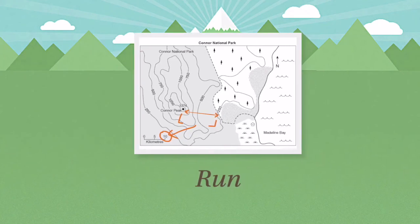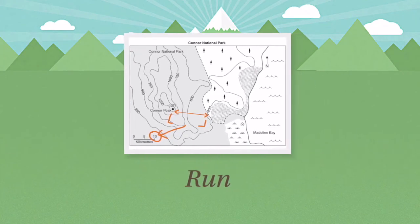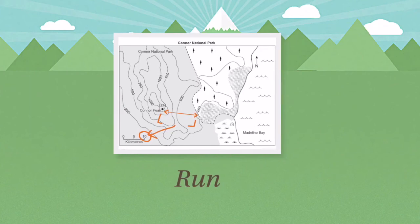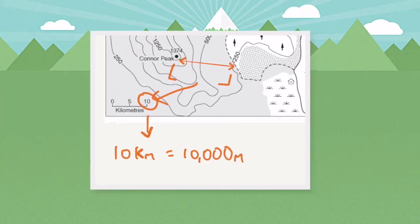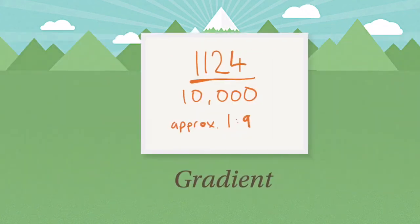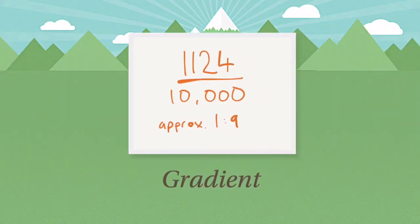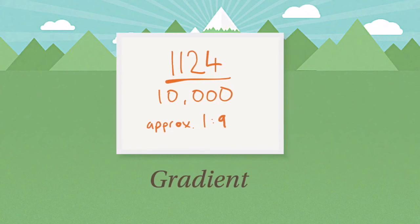And for the run we look at the distance with our ruler and then the scale on the bottom left and find a convenient 10 kilometres. But remember kilometres need to be converted to metres so it's the same as our rise. Then by doing some rough maths we arrive at approximately a gradient of 1 to 9.